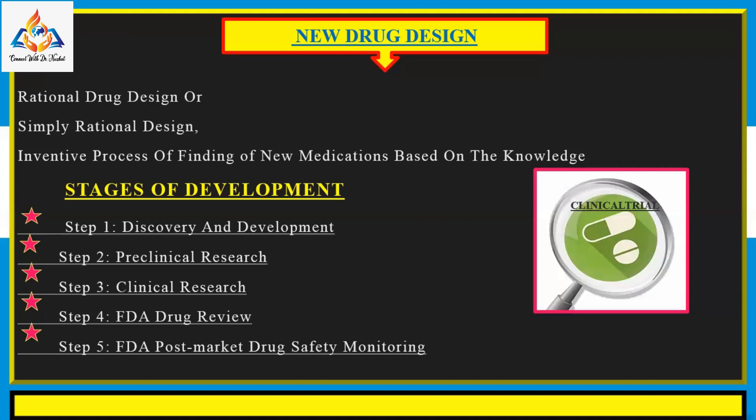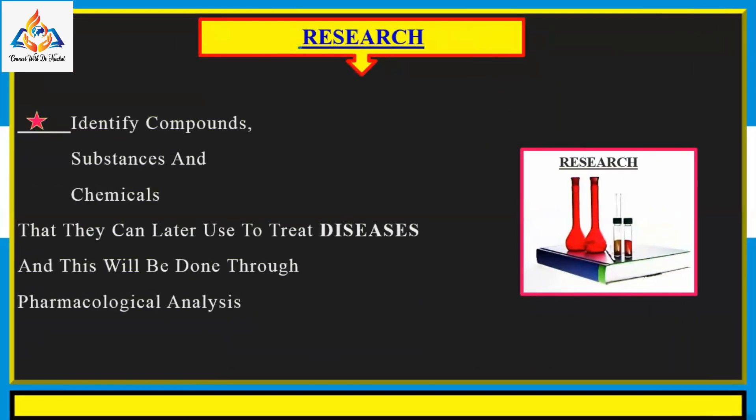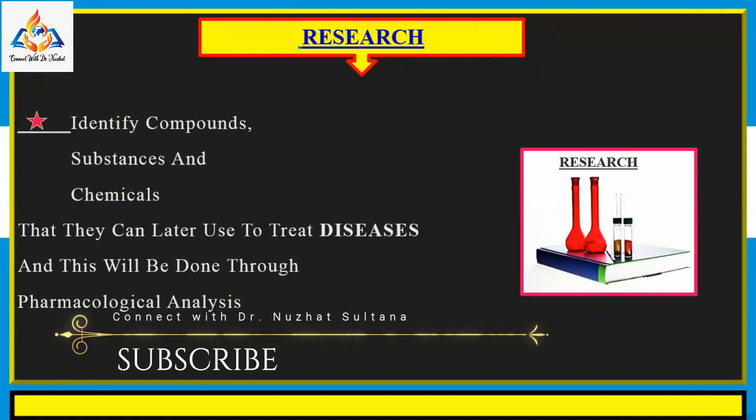Phase three of a clinical trial usually involves up to three thousand participants who have a condition that the new medication is made to treat. Phase four, or FDA approval, involves post-marketing studies imposed upon a pharmaceutical firm as a condition for drug approval. FDA post-market drug monitoring involves FDA monitoring adverse events such as adverse reactions and poisoning.